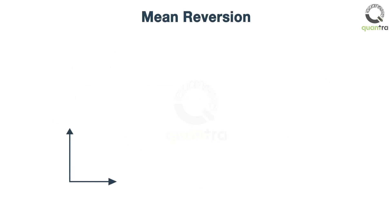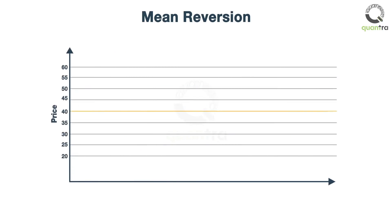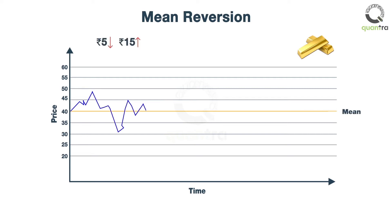Let us consider this example. Every day, the price of gold rises or falls by say 5 Indian rupees to 15 Indian rupees. One day, it rises by 30 Indian rupees. If there is no significant reason behind this rise, then as per the mean reversion principle, it is expected that the gold prices will fall down.